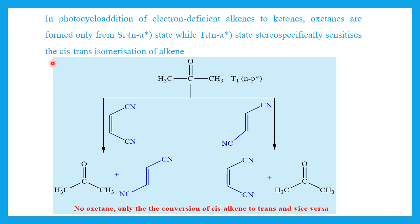In photocycloaddition of electron-deficient alkenes to ketones, oxetanes are formed only from the singlet state. While if we have the ketone in the triplet state, there is no product formation. The triplet state ketone only sensitizes the cis-trans isomerization of the alkene — it behaves as a photosensitizer and transfers its energy to the alkene. Thus cis is converted to trans and trans to cis, while the ketone remains unchanged. So there is no oxetane formation, only interconversion of cis and trans alkenes.